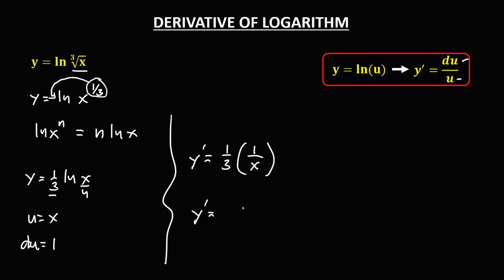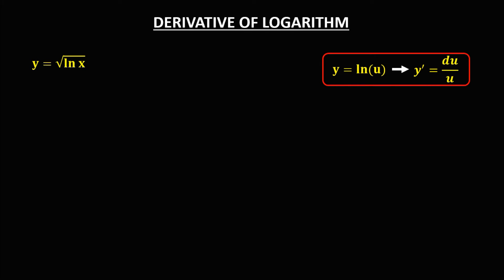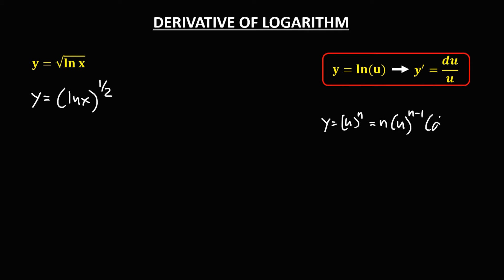For the next given, we rewrite in exponential form: y equals (ln x) to the power 1 over 2. Using the power rule, y equals u to the power n, so the derivative is n times u to the power n minus 1 times the derivative of u. Here n is 1 half, so y prime equals 1 half times (ln x) to the power (1 half minus 1).